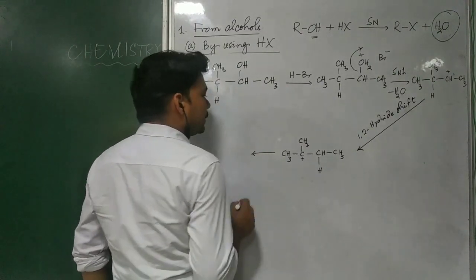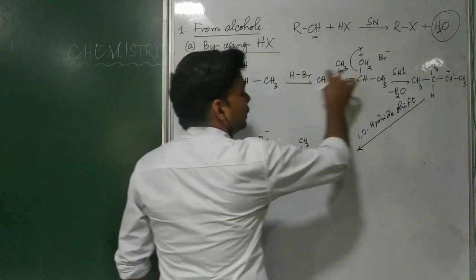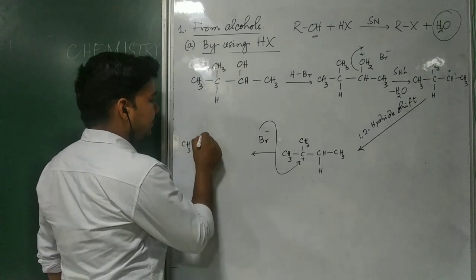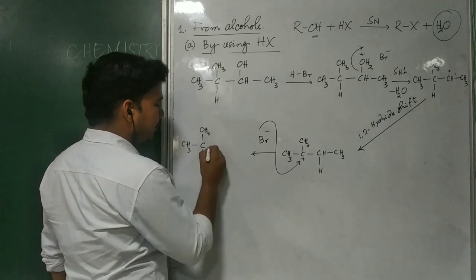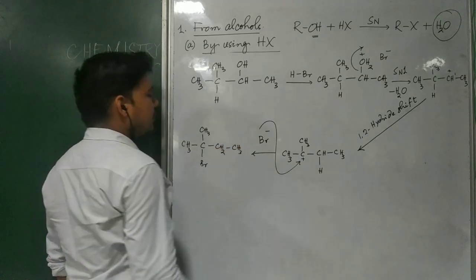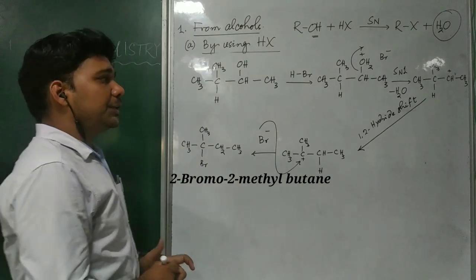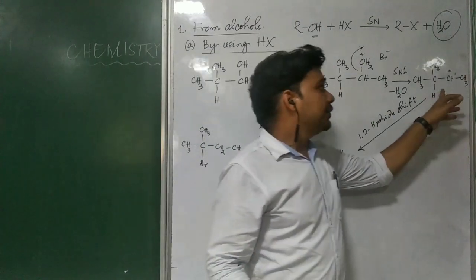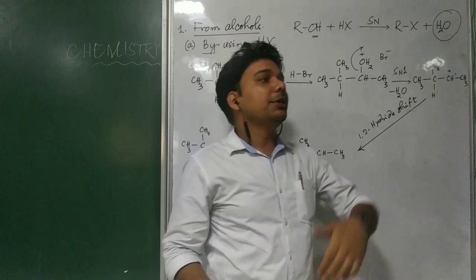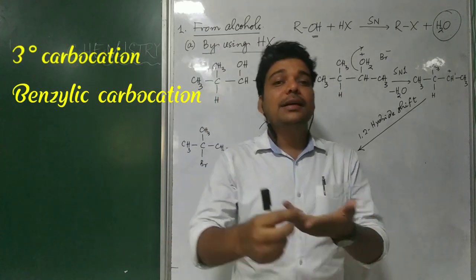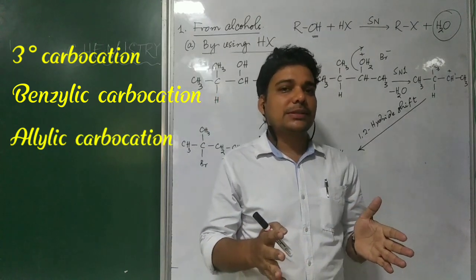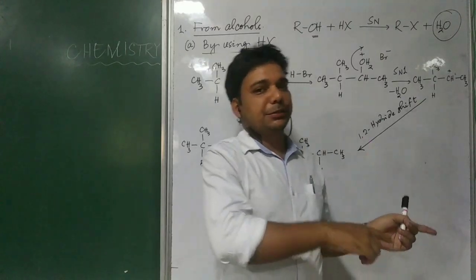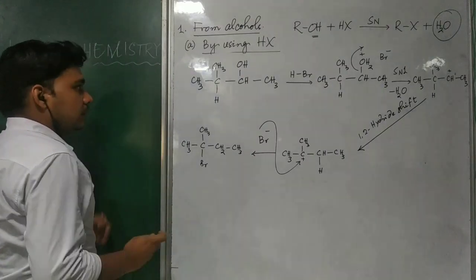In the last step, the nucleophile Br⁻ attacks this carbocation center, giving rise to the formation of the final product. The rearrangement in this reaction is simply due to this rearrangement step. We need to think about rearrangement steps whenever the initially formed carbocation can be converted into a more stable carbocation. If there is a chance that such a more stable carbocation can be formed, then we need to consider rearrangement.